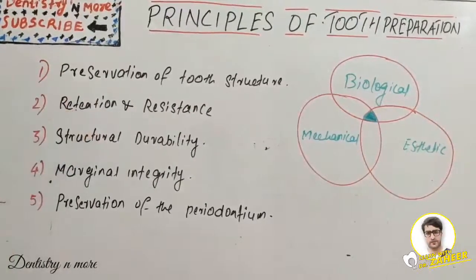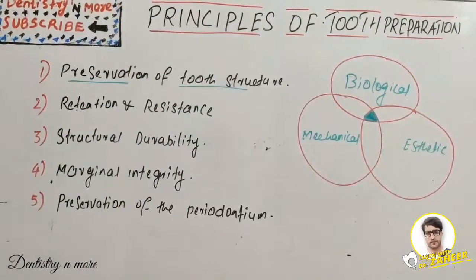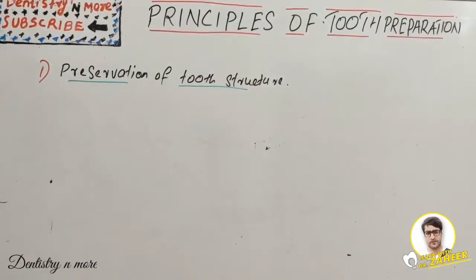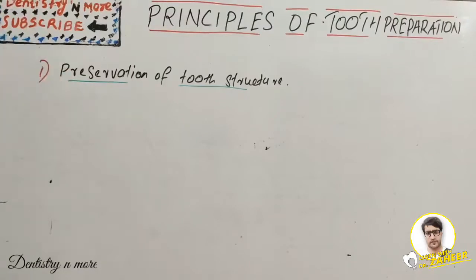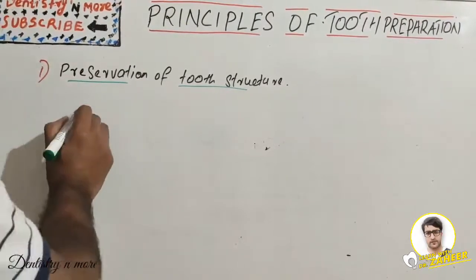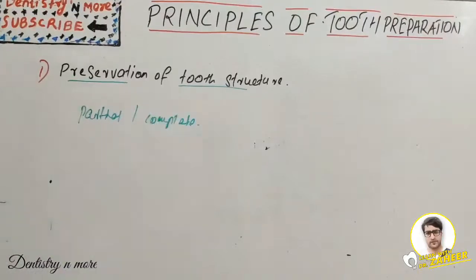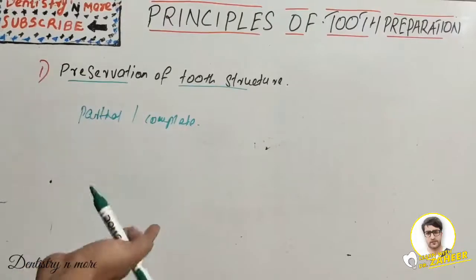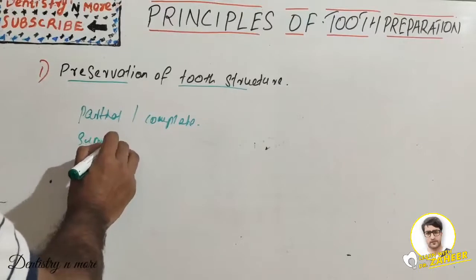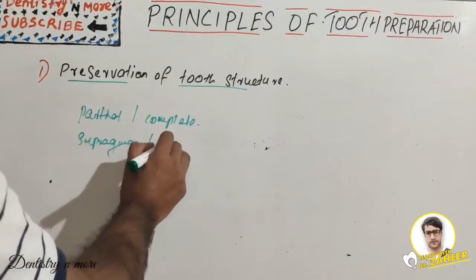The first principle is preservation of tooth structure. By definition, tooth preparation is a process of removal of diseased and/or healthy enamel, dentine, and cementum to shape a tooth to receive a restoration. The guidelines for preserving remaining tooth structure will change depending on whether the preparation is partial veneer or complete restoration, and also according to the restoration or crown being planned.